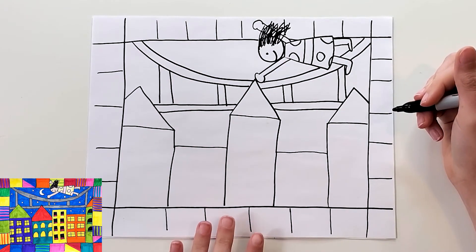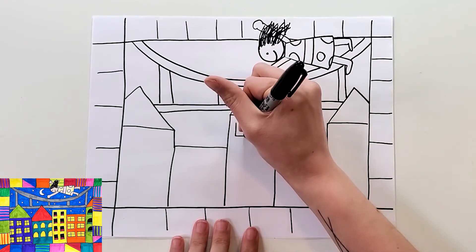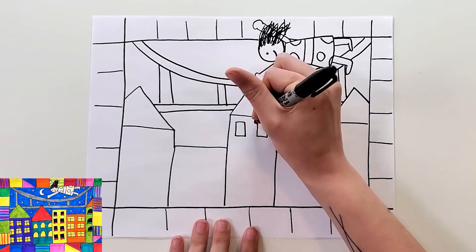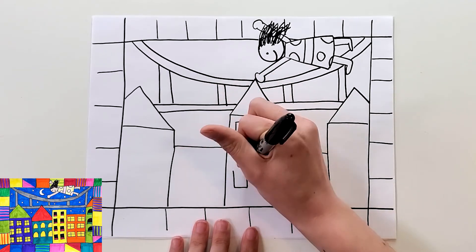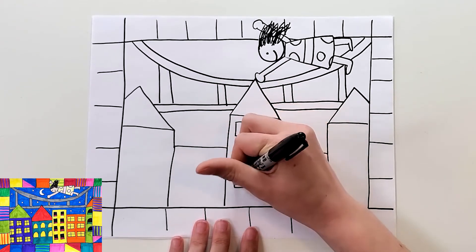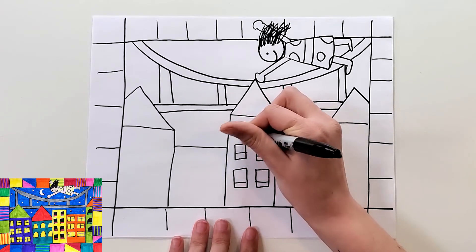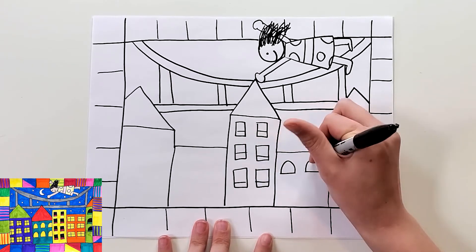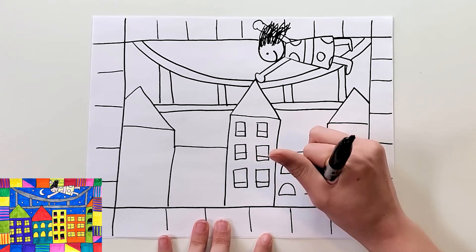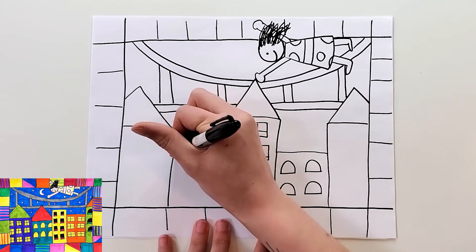Now I'm going to add some details. I can add windows. You could try squares or a half circle or rectangles.